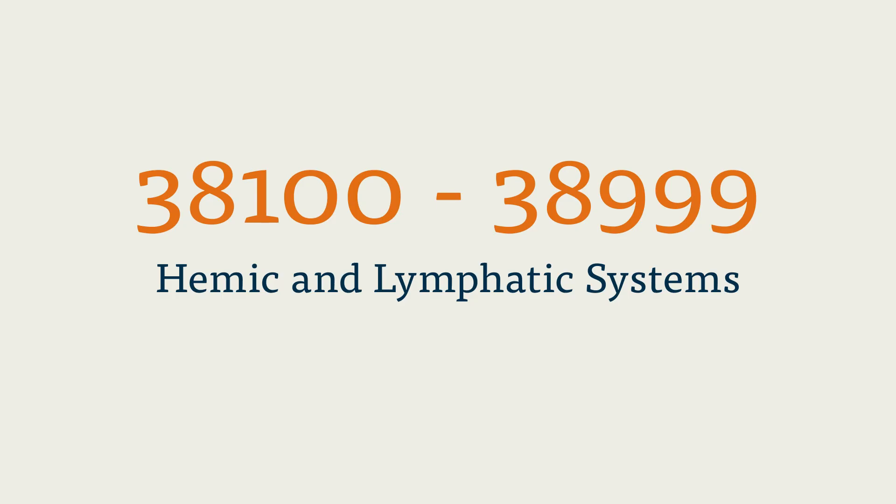Unfortunately, we do not have an exact figure for how many questions will be devoted to the hemic and lymphatic systems on the CPC exam — the AAPC does not release that information. Due to the brevity of their subsection in the CPT manual, you can assume that there won't be many. Codes for the hemic and lymphatic systems are found in the numerical range 38100 to 38999.